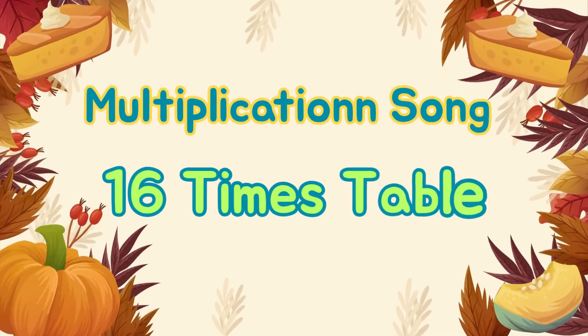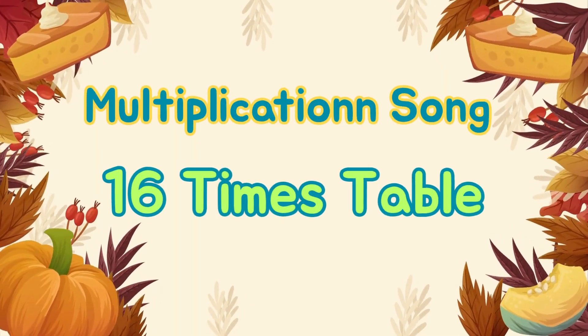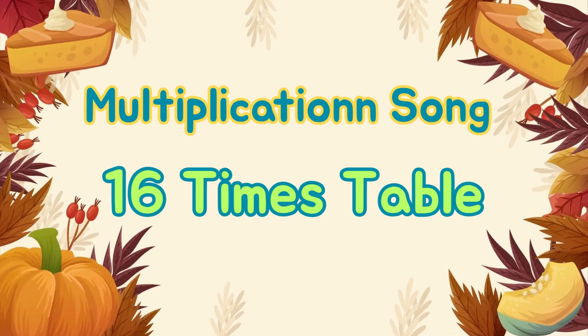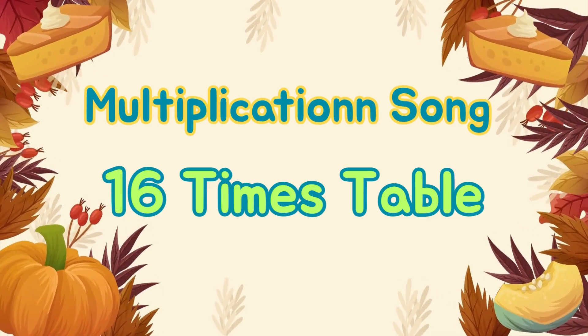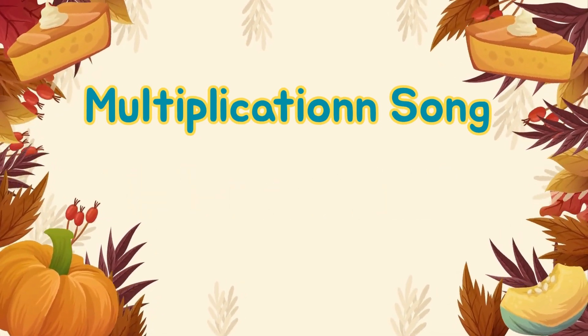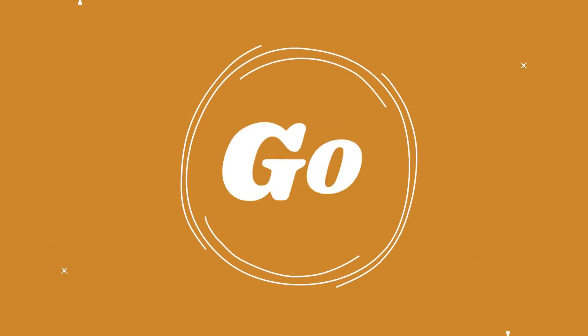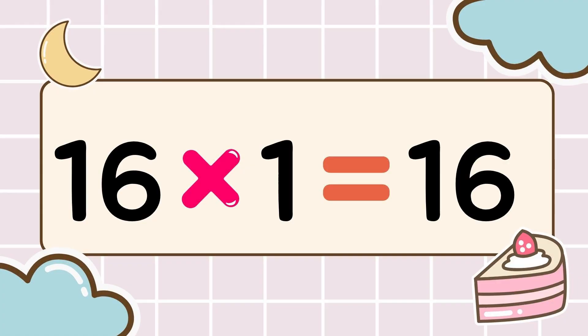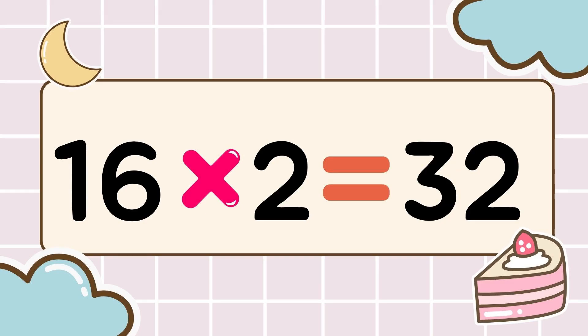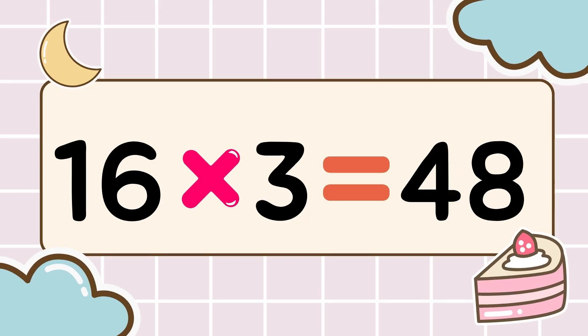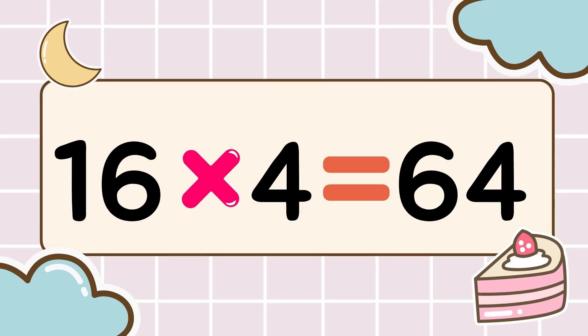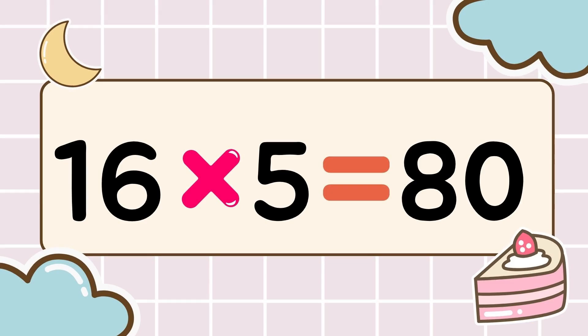That's time! Let's start multiplying! Let's have fun while we learn. 3, 2, 1, let's go! 16 times 1 is 16. 16 times 2 is 32. 16 times 3 is 48. 16 times 4 is 64. 16 times 5 is 80.